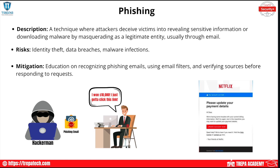Risks include identity theft, data breaches, and malware infections. There's a running joke in cybersecurity that you can have the best defense-in-depth approach — zero trust, EDR, XDR, DLP, firewalls, the whole onion-layered security — and a single email a user opens will compromise your security. The best mitigation for phishing and most social engineering attacks is education: making users aware, having them recognize phishing emails, gamifying user awareness training. Technical solutions include email filters, DNS blacklisting, and domain blacklisting to block known bad domains before messages even reach the user.